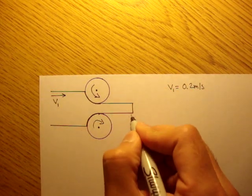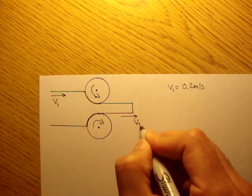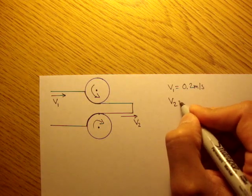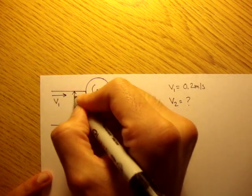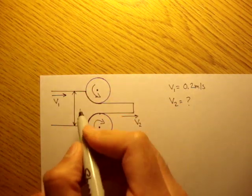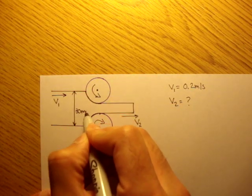The velocity coming in, velocity 1, is equal to 0.2 meters per second. The velocity is coming this way. And they want to find out what is the velocity coming out. What is V2? And the height of this is 30 millimeters.